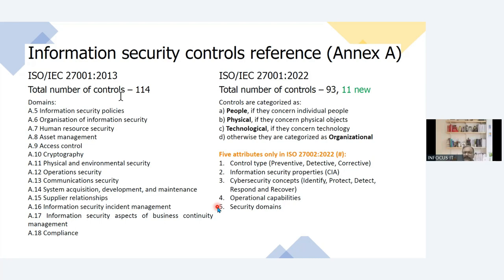Then cyber security concepts — identify, protect, detect, respond and recover. This has been taken from ITIL libraries and even in NIST controls the same framework is there. So it seems that mapping has been done with other parallel standards also so that compatibility should be maintained. Then there are operational capabilities and security domains. These are the five attributes that have been added in 27002:2022.